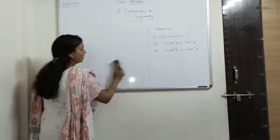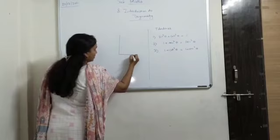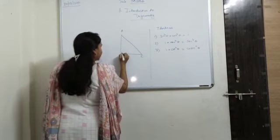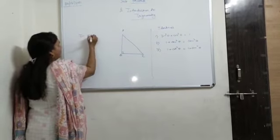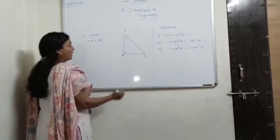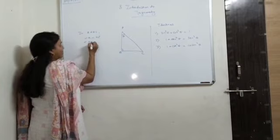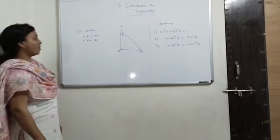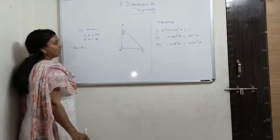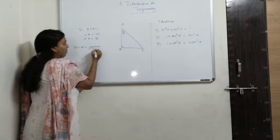So firstly we will go through the formulae. What are the formulae to find that? So in triangle ABC, angle B is equal to 90 degree, and if angle A is equal to theta here, then if I have to find sine theta, the formula is opposite upon hypotenuse.